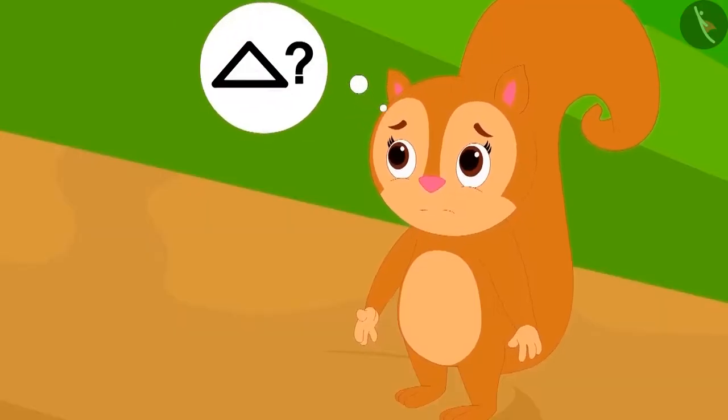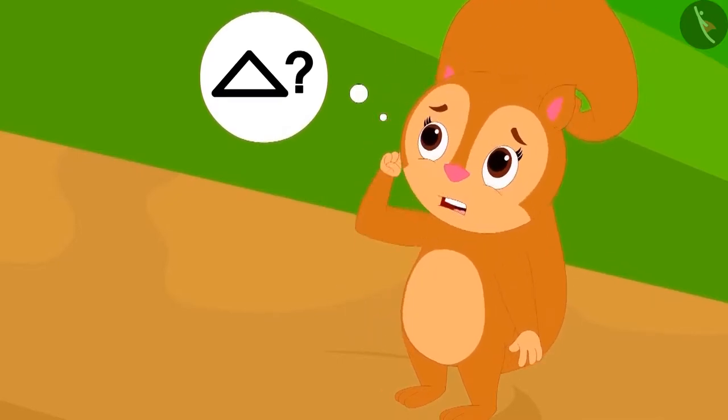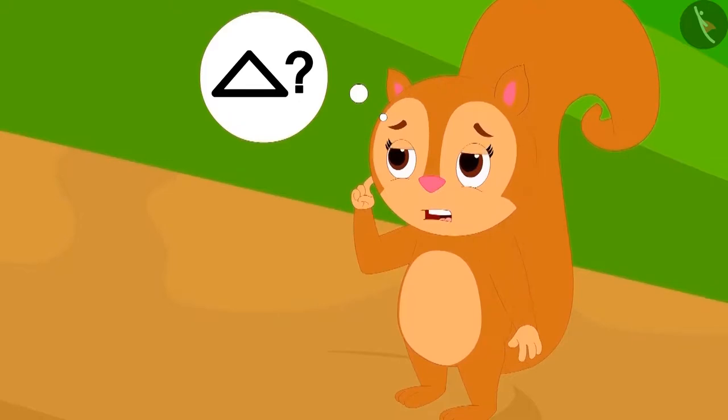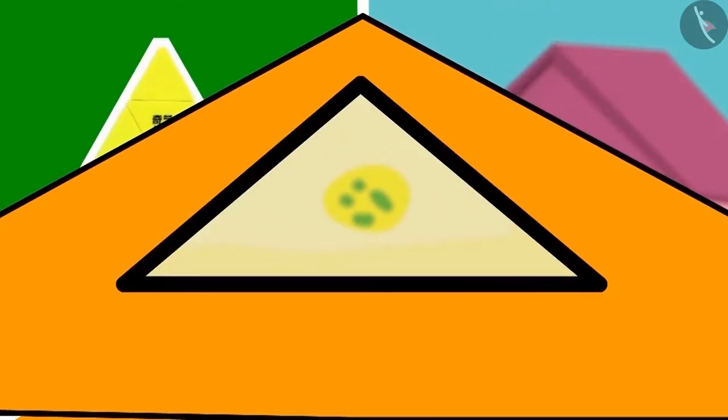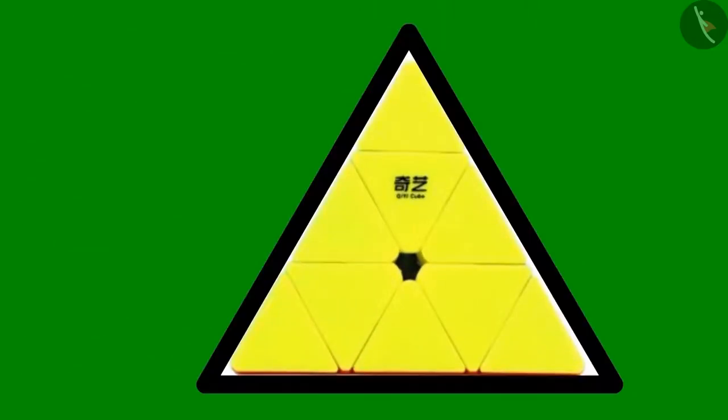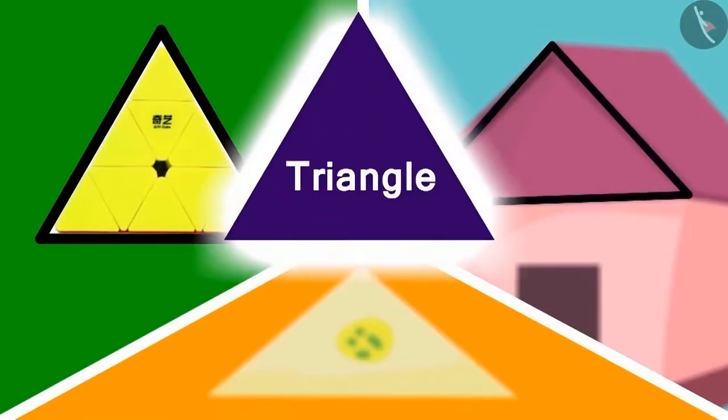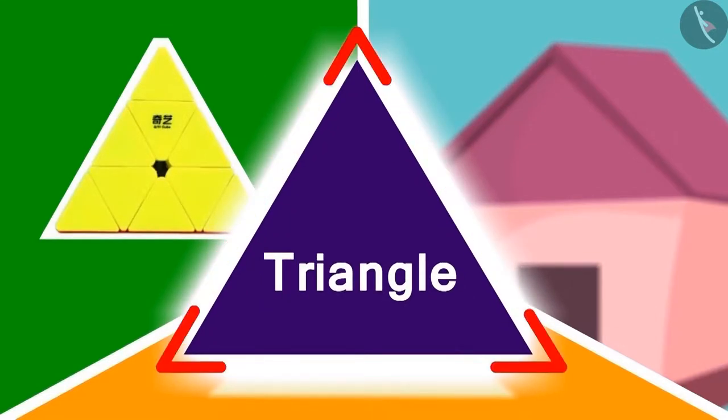Have you seen a triangle elsewhere? Let us listen to Appu's poem on triangle and know this. Like this piece of Barfi is a triangle. This roof and toy is also a triangle. The triangle has three sides and three corners.